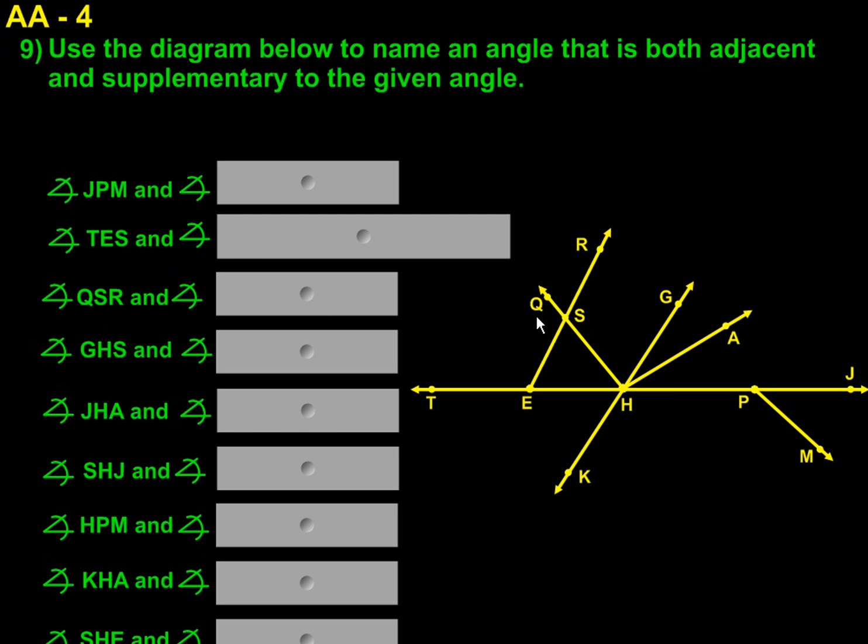Next, we have this diagram with a whole variety of different kinds of angles. And we need to use that diagram to name an angle that is both adjacent and supplementary to a given angle. So adjacent means next to, supplementary means that this angle that we're given and the other ones that we name will create a 180 degree line.